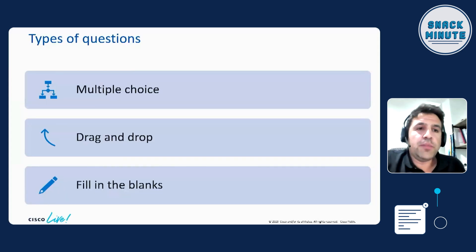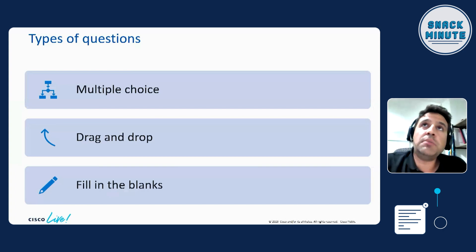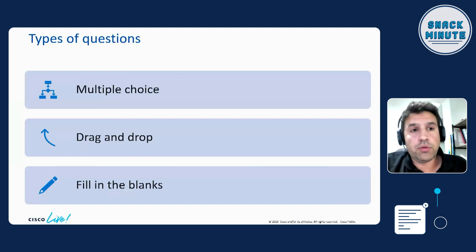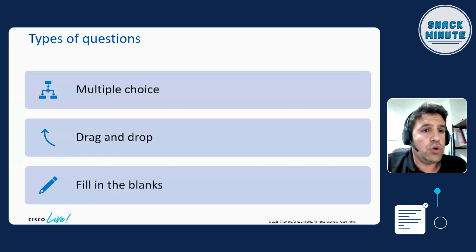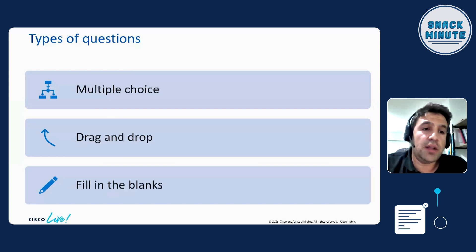Within the Cisco certifications, we have three groups of questions. Multiple choice — pick ones or pick twos. Drag and drops — it might be a simple drag and drop where you take something from the left and place it on the right, or even a graphical drag and drop where we present a piece of code, something is missing, and we ask candidates to drag and drop code snippets or statements onto the code to complete or execute a function. And we also have another type: fill in the blanks.